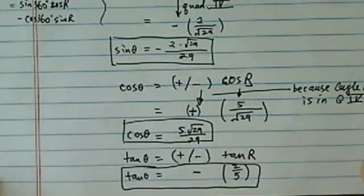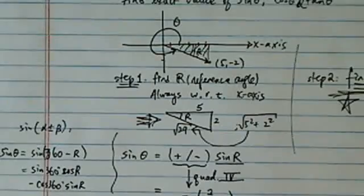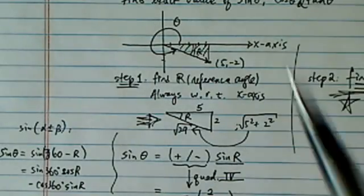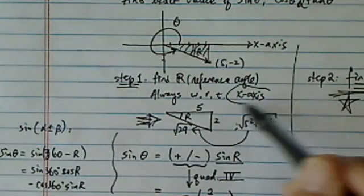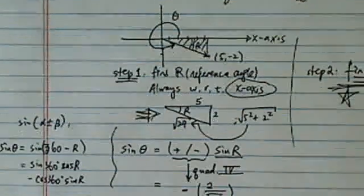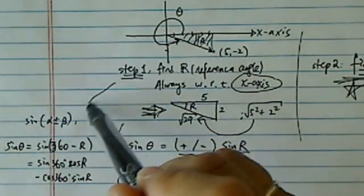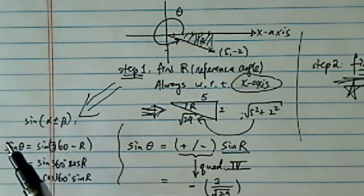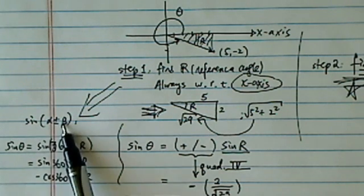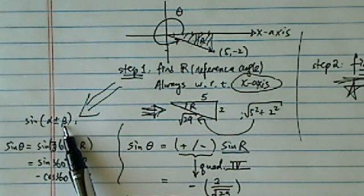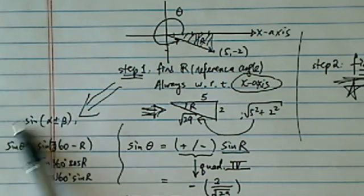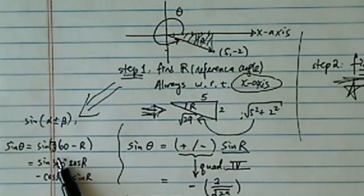So there you have it. It's a two-step process. First of all, you draw the angle and you find out what the reference is. Once again, it has to be with respect to x-axis. If you are curious how to prove it, you can use the sine angle sum and difference formula, so you can actually prove it yourself.